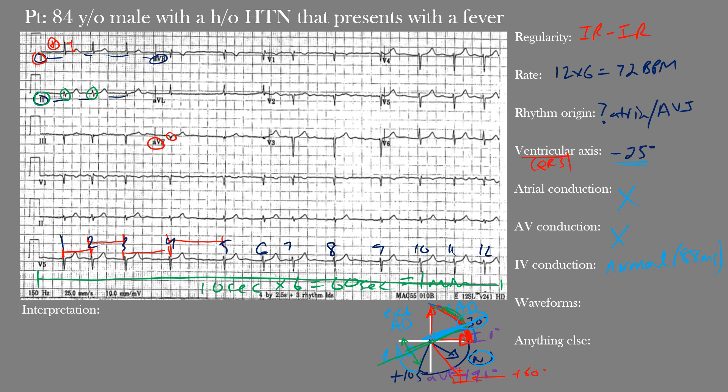When we talk about anatomically contiguous leads, the inferior leads are II, III, and AVF — these are contiguous to each other. Leads I and AVL are contiguous to each other. So pathological Q waves in those grouped leads fulfill the contiguous-lead requirement.